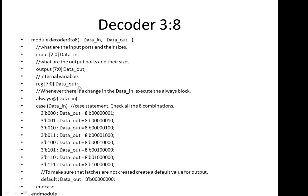For internal registers we take an 8-bit register. In the behavioral model, we use 'always @(data_in)'. Inside a case statement: when data_in equals 3'b000, data_out should be 8'b00000001 — that is, the last bit should be 1 and all others zero.